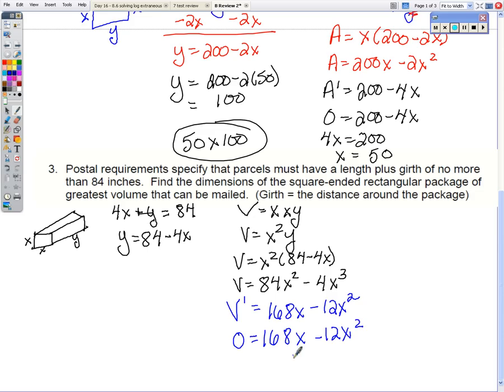I can factor out a 12x here. And I'm left with 14 minus x. When I set each factor equal to 0, x is either 0 or x is 14.